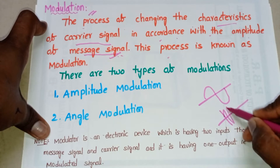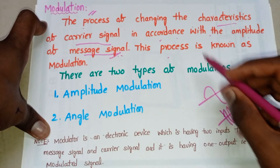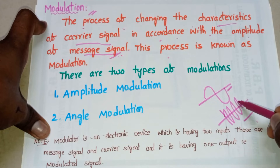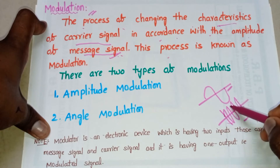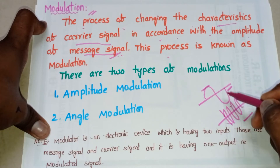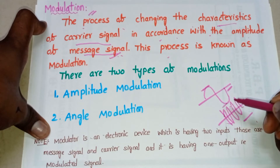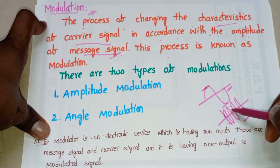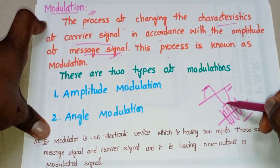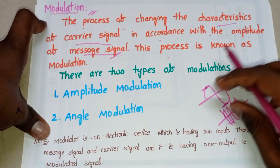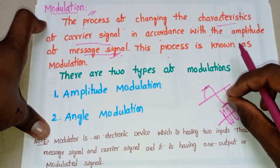The process of changing the characteristics of the carrier signal in accordance with the amplitude of the message signal can be observed visually. Here, this is the peak amplitude and this is the negative peak amplitude of the message signal. Whenever we are at the peak amplitude of the message signal, the characteristics of the carrier signal are also high. Whenever we are at the negative peak, the characteristics are also low.